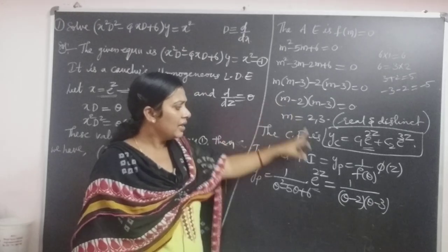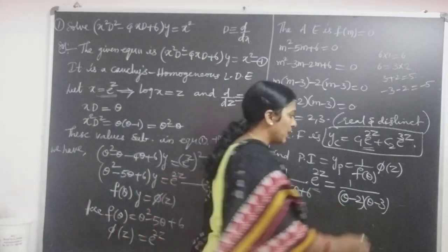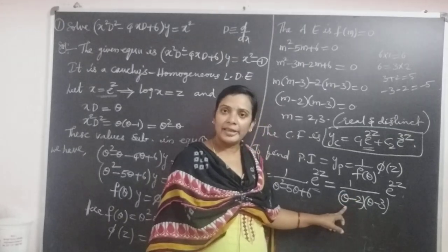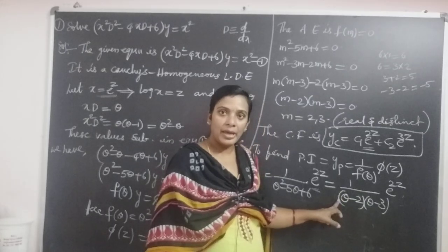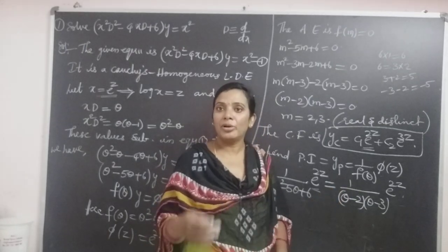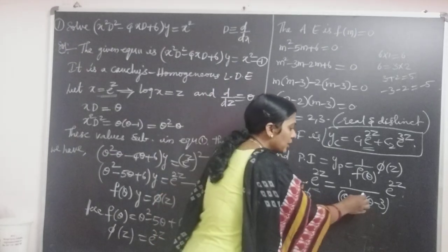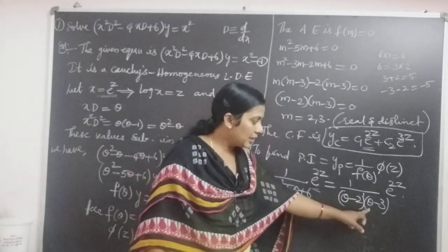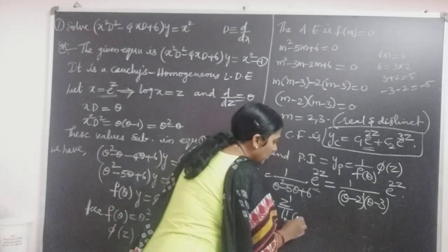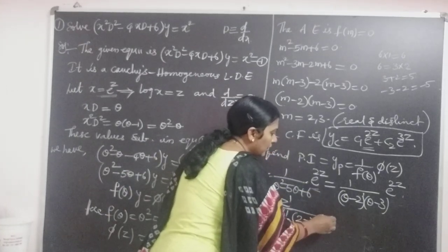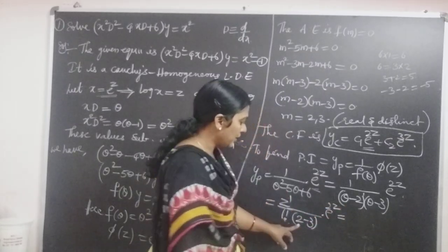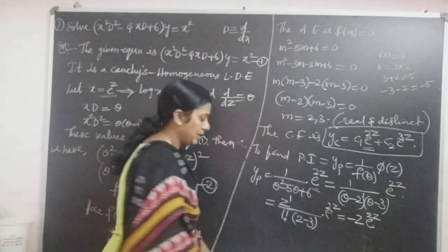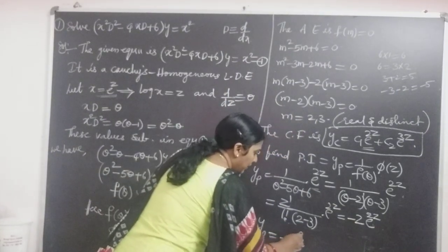Replacing m with theta, the factors are (theta minus 2)(theta minus 3). In the first factor, setting theta equal to 2 makes it zero, so we apply the rule giving z power 1 over 1 factorial, i.e., z over 1. Then in the second factor, substituting theta equal to 2 gives 2 minus 3 into e power 2z, which equals minus 1 times 1 factorial. Combining: yp equals minus z e power 2z.